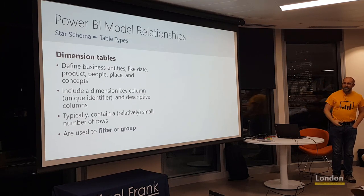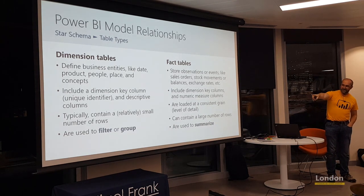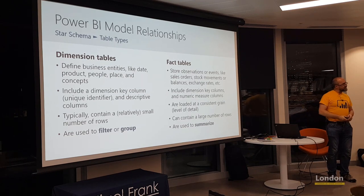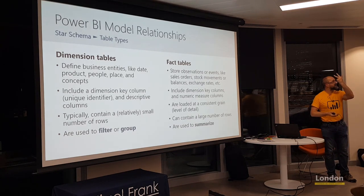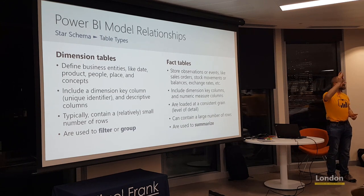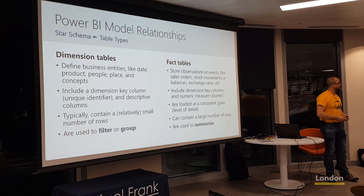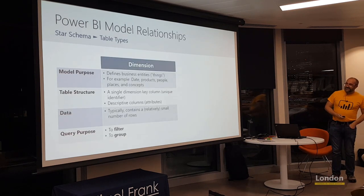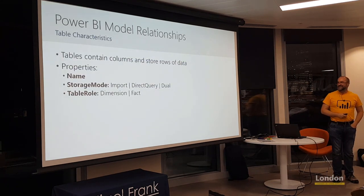Everything that Power BI does when visualizing data is concerned with filtering, grouping, and summarization — filter by calendar year 2019, group by country, sum to get population. Dimension tables support filtering and grouping; fact tables support summarization of your activity. This slide gives even more details — it's a great resource to catch up with later.